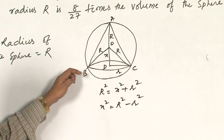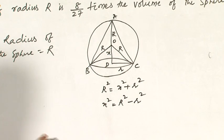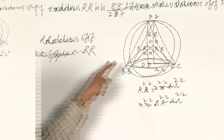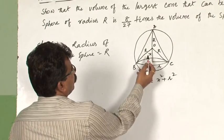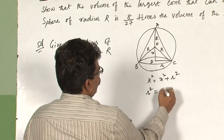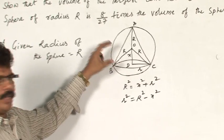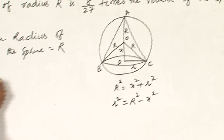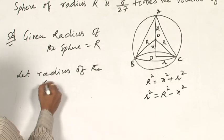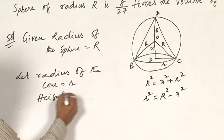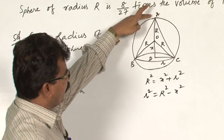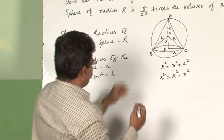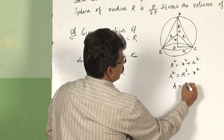Here I have taken the variable as x. Among all the cones which can be inscribed in a sphere, we have to find the cone whose volume is maximum. From this right triangle, r squared is equal to capital R squared minus x squared. See the figure — the height of the cone is equal to capital R plus x, where capital R is the radius of the sphere (AO) and OD is assumed as x. Therefore, the height h of the cone is equal to capital R plus x.